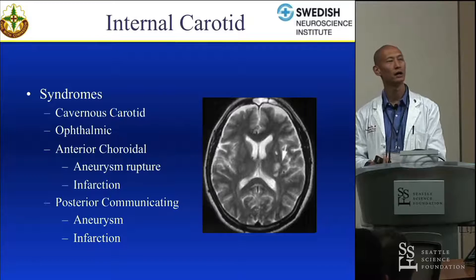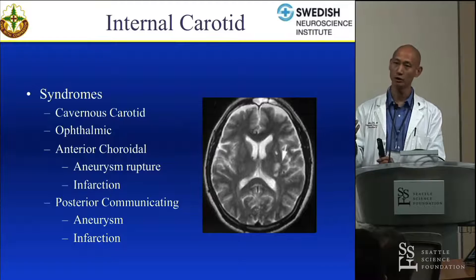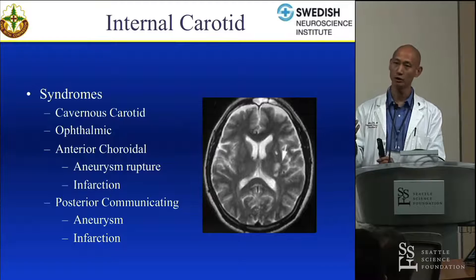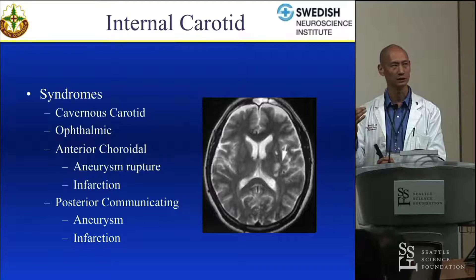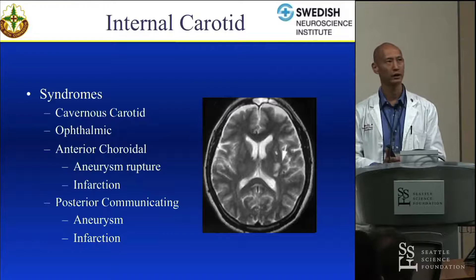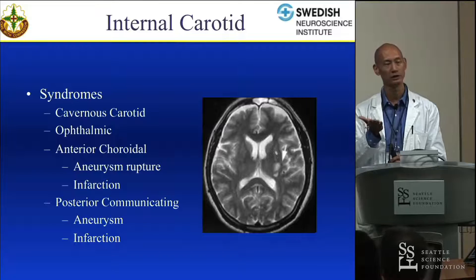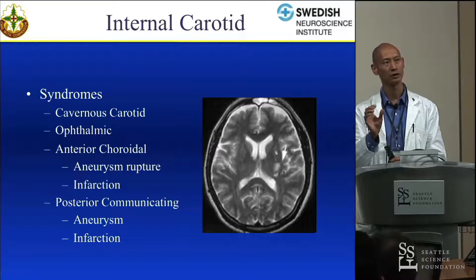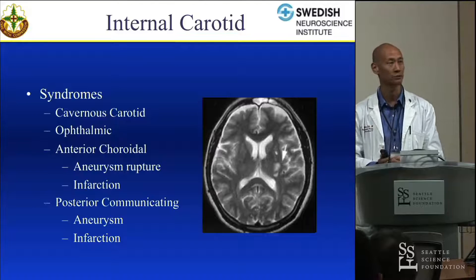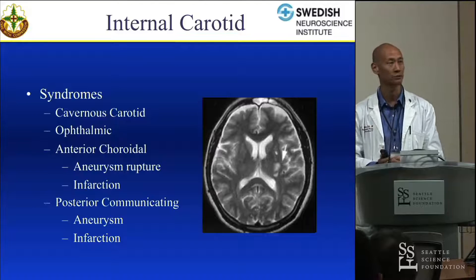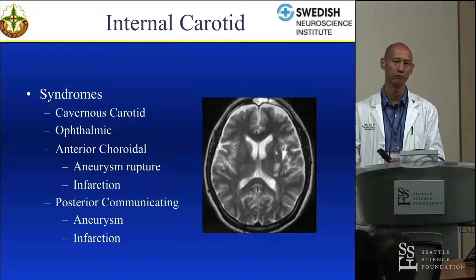Posterior communicating aneurysms: classically, we talk about third nerve palsy. If they get large or rupture, one of the first things they may present with is parasympathetic paresis, as opposed to complete extraocular motor palsy — because the parasympathetics run on the outside of the nerve, they're the first thing compromised. Regarding infarction: theoretically, if you have a P1 segment you shouldn't have problems, but the posterior communicating does give rise to a lot of thalamic perforators. On high-resolution angiogram you can see tiny perforators supplying the ventral and anterior aspect of the thalamus. If you occlude the posterior communicating, hopefully you're not causing thrombus within the whole vessel, and blood supply from the posterior circulation would take over for the thalamus.